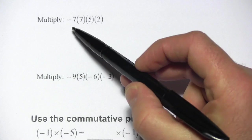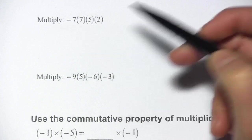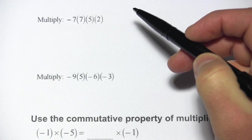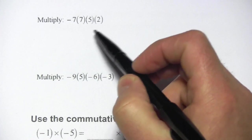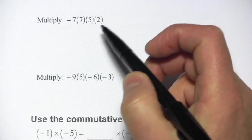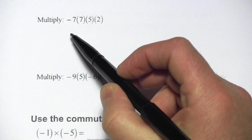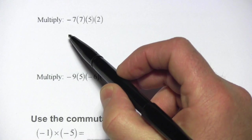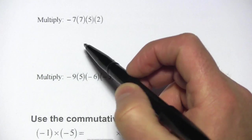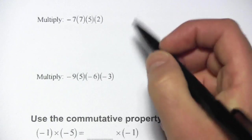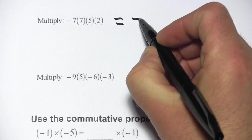The first problem says: multiply seven times seven times five times two, and there's one negative sign. As a refresher, when you're multiplying or dividing, if you have an odd number of negative signs the answer is going to be negative. If you have an even number of negative signs the answer is going to be positive. Here we have one, which is odd, so I know my answer is going to be negative.